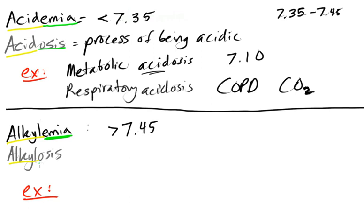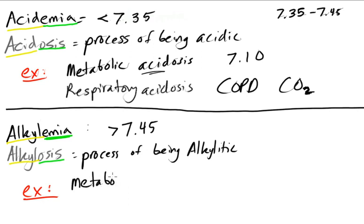So let's take a look at alkalosis here. Osis, remember, is the process of being. So we have the process of being alkalitic, being above 7.45 pH. So what could give us a process of being alkalitic? Well, we have metabolic alkalosis. That could be a metabolic issue where we get rid of all of our hydrogen ions, giving us a metabolic state of being above 7.45 pH.